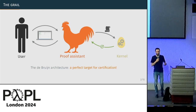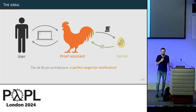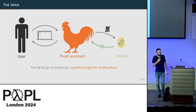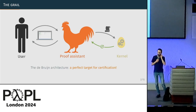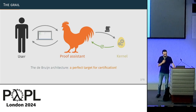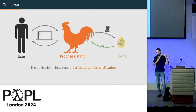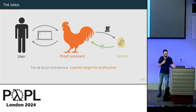This is a prime target for certification efforts, especially since we're using proof assistants in so many contexts these days. If your kernel implements some dependent type theory, you'll need a significant amount of metatheoretical properties of your type theory before you're able to do that work.